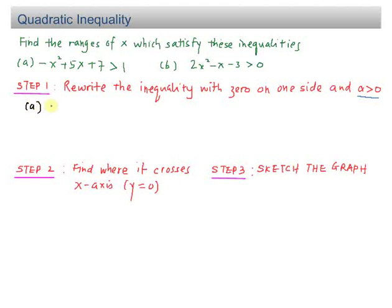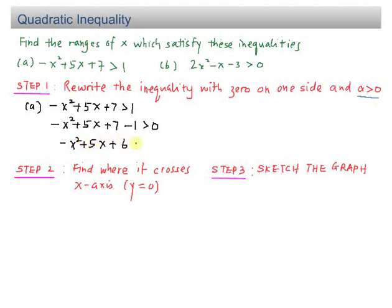For part A, I have negative x squared plus 5x plus 7 more than 1. I need to rewrite with 0 on one side, so I bring the 1 over to the left-hand side: negative x squared plus 5x plus 7 minus 1 more than 0, giving negative x squared plus 5x plus 6 more than 0. The coefficient of x squared is negative 1, so I multiply both sides by negative 1 to get positive x squared minus 5x minus 6.